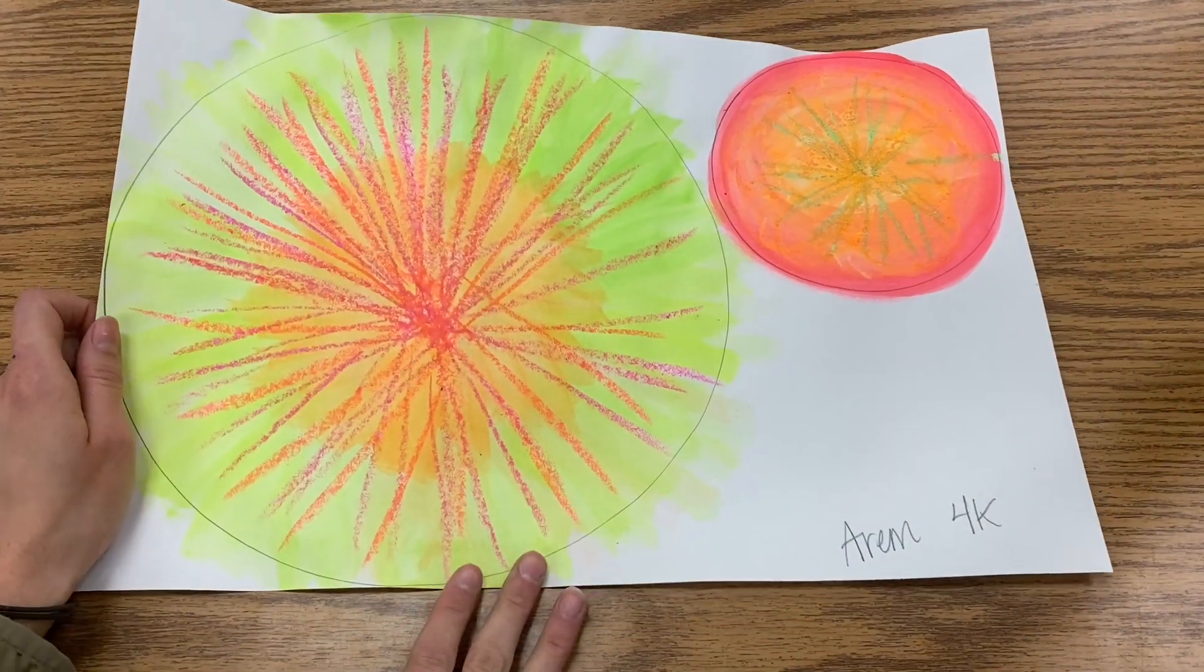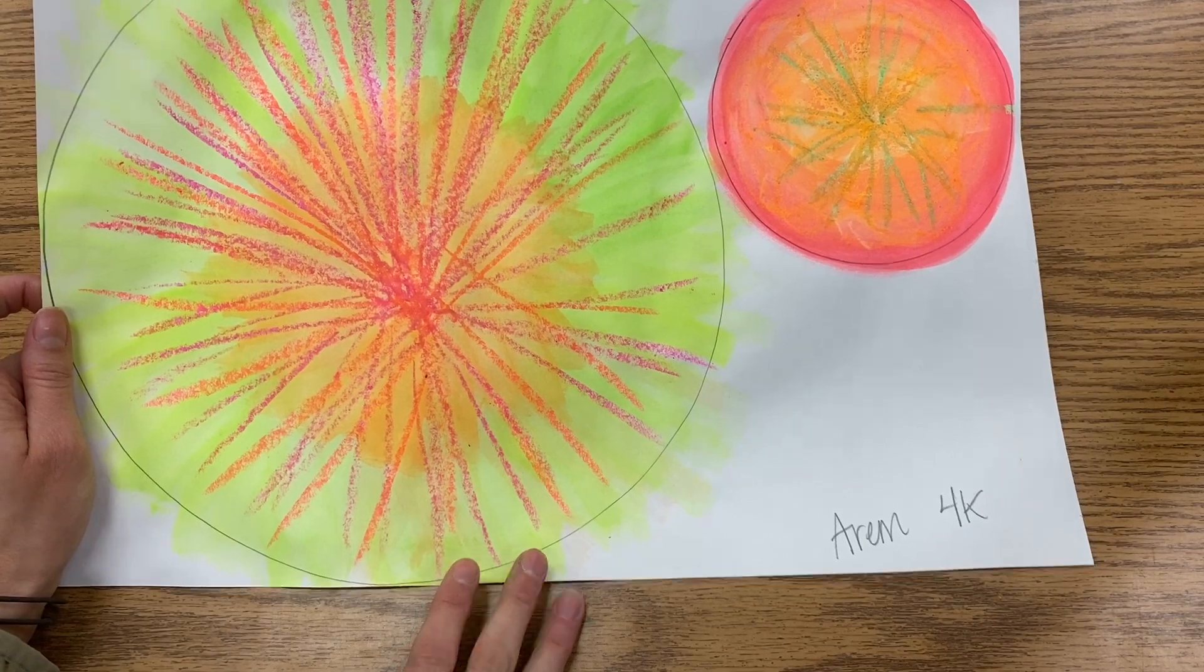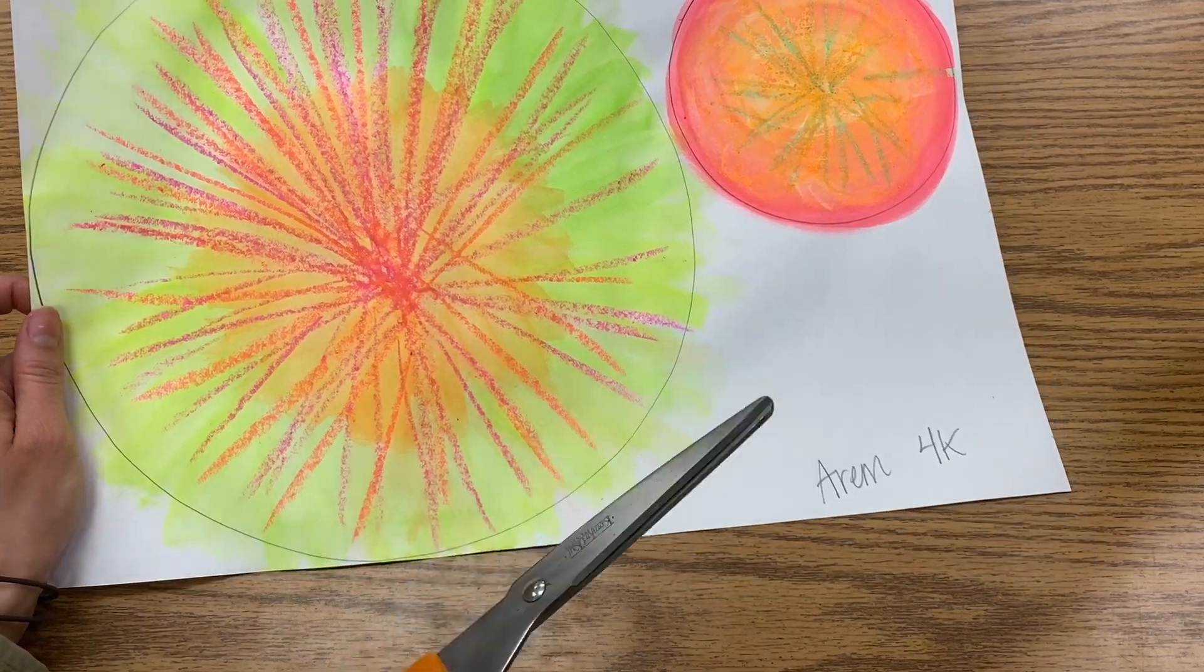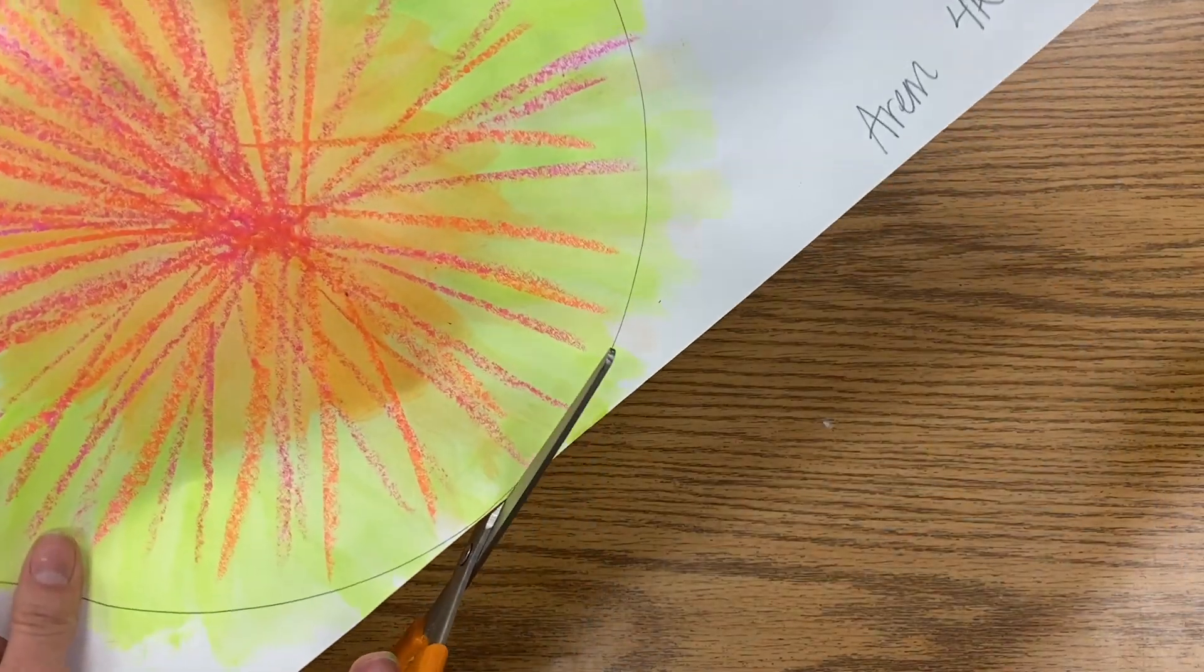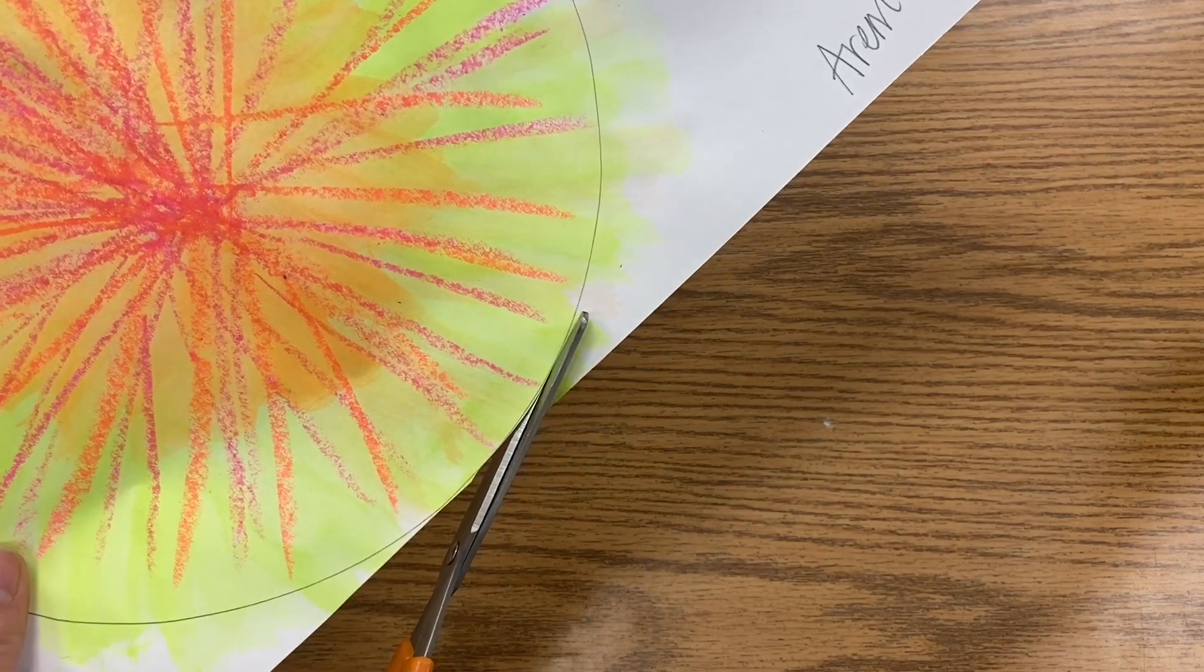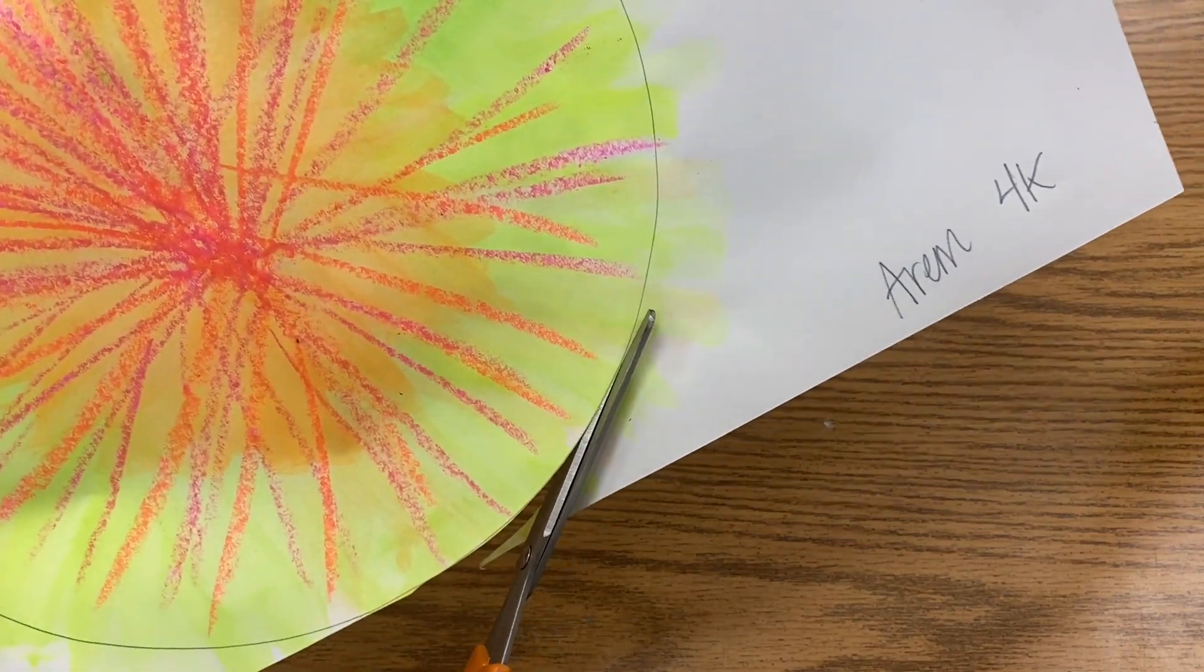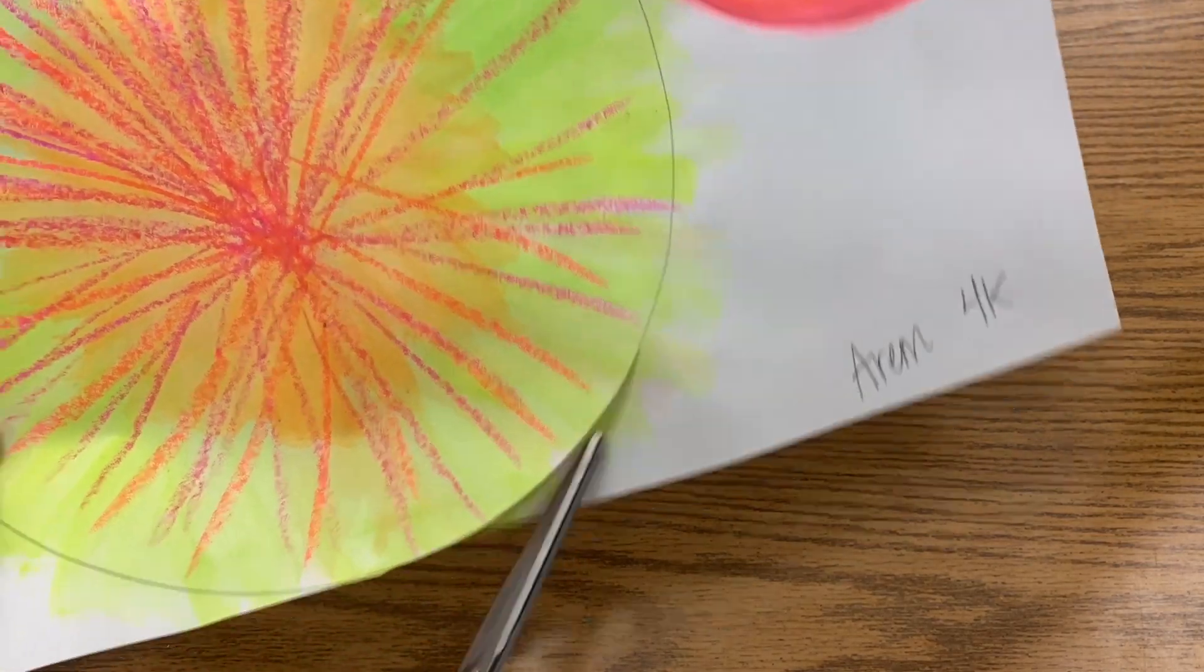Part one today of turning our abstract circles into Georgia O'Keeffe inspired flowers is to begin by cutting them out. So with your scissors, go ahead and cut as neatly as you can on your pencil line so we get two nicely cut circles.